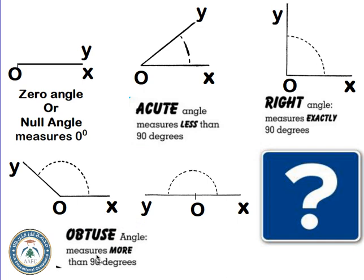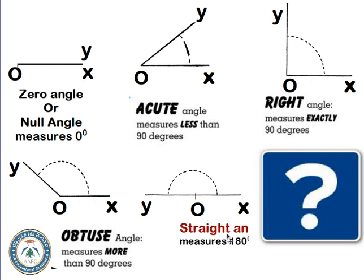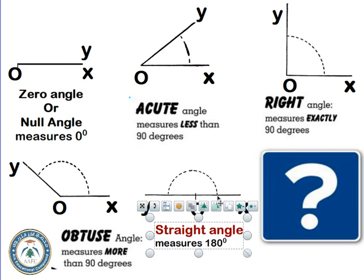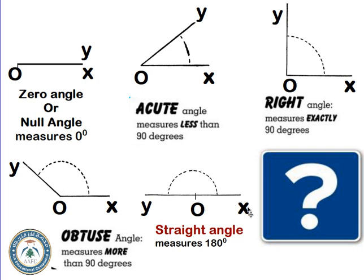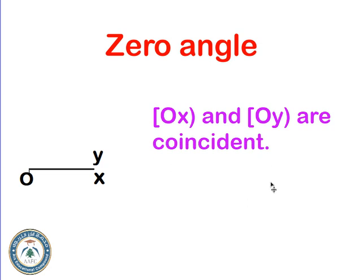An obtuse angle measures more than 90 degrees but less than the straight angle — so it is between 90 and 180 degrees. The straight angle XOY measures exactly 180 degrees. When we have a straight angle, points X, O, and Y are collinear.